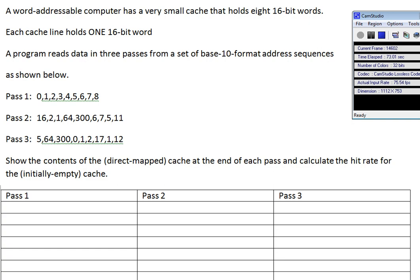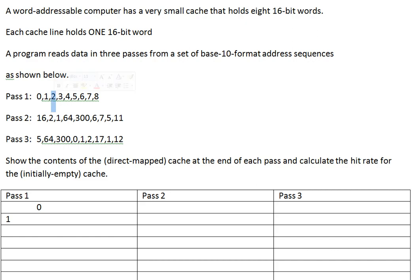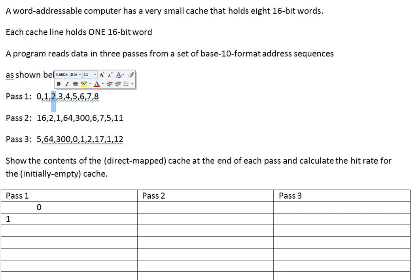Pass one. Word zero goes there — it's initially empty, so that's a miss. Word one goes into cache line one, because the line size is one word, so it's block one. It goes into line one mod eight, which is one. Block two goes into line two mod eight. Same with three, four, five, six, seven.